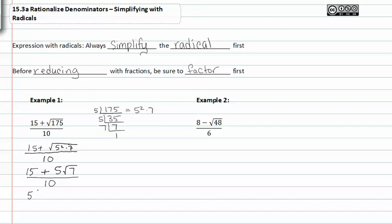Five is the common factor between fifteen and five root seven. We're left with three plus root seven inside parentheses all over ten. I can now divide out the common factor which is five. Five divided by five is one, ten divided by five is two.